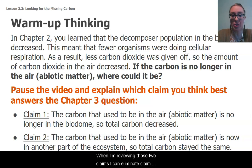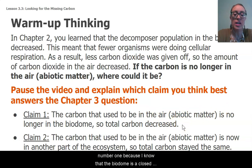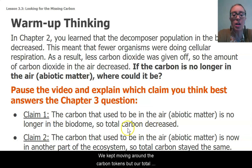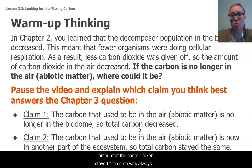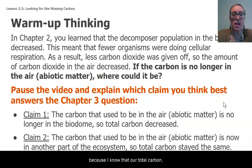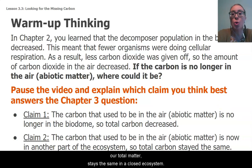When reviewing those two claims, I can eliminate claim number one because I know that the biodome is a closed system, and so that means no matter enters or exits, and so the total carbon can't decrease. Last lesson, when we did the carbon game, we kept moving around the carbon tokens, but our total amount of carbon tokens stayed the same — it was always 30. So that means claim number two best answers our question, because I know that our total carbon, our total matter, stays the same in a closed ecosystem.